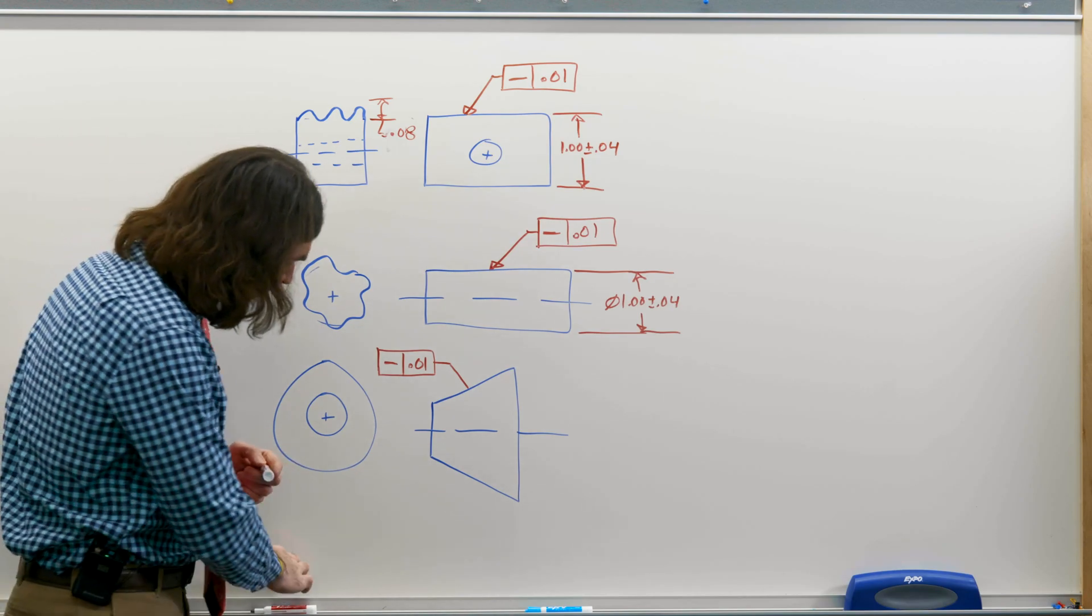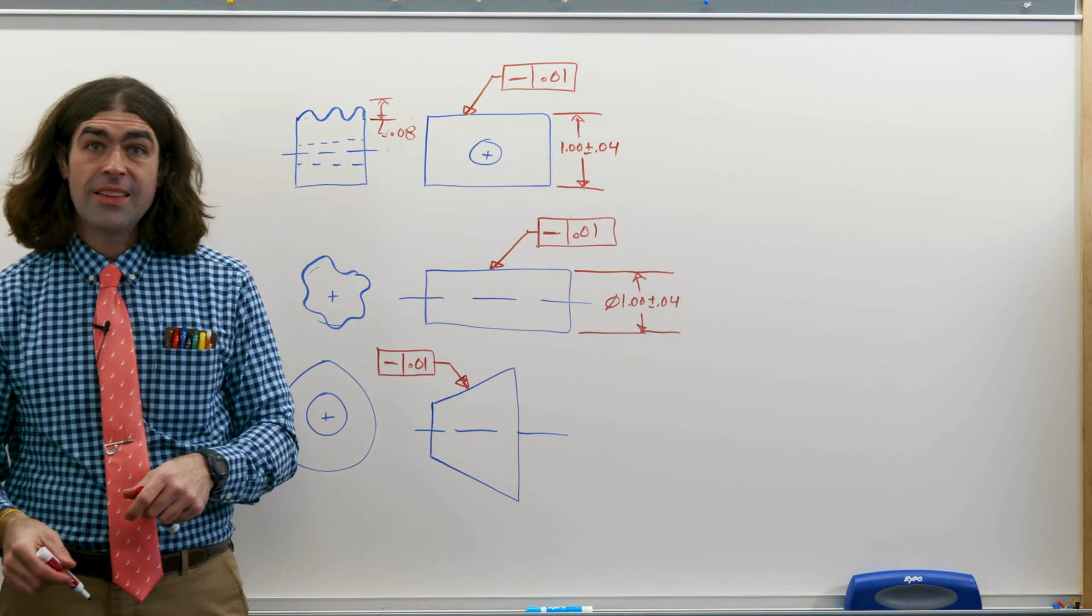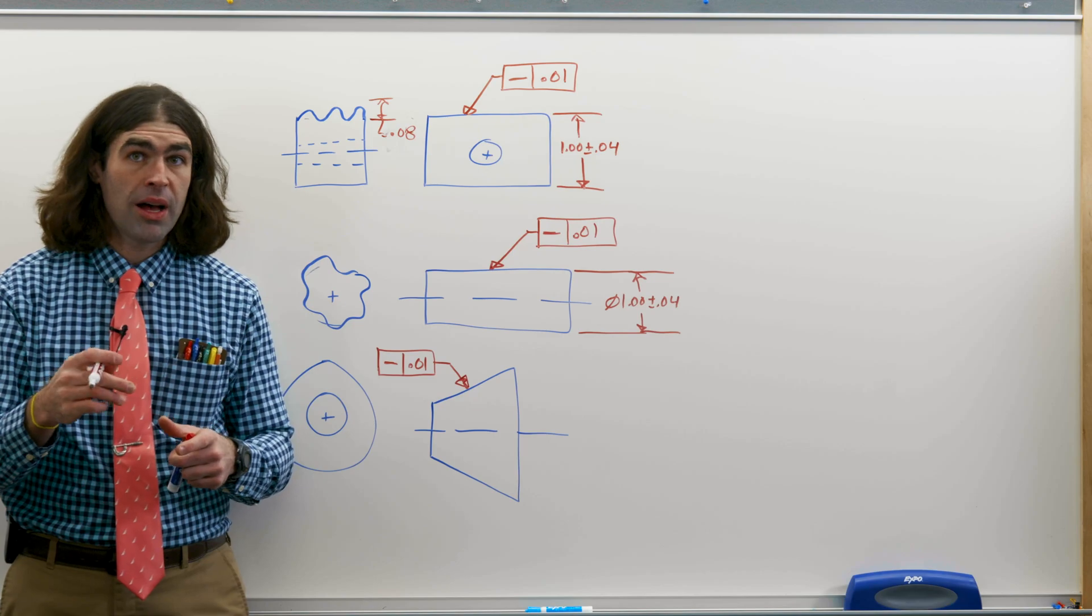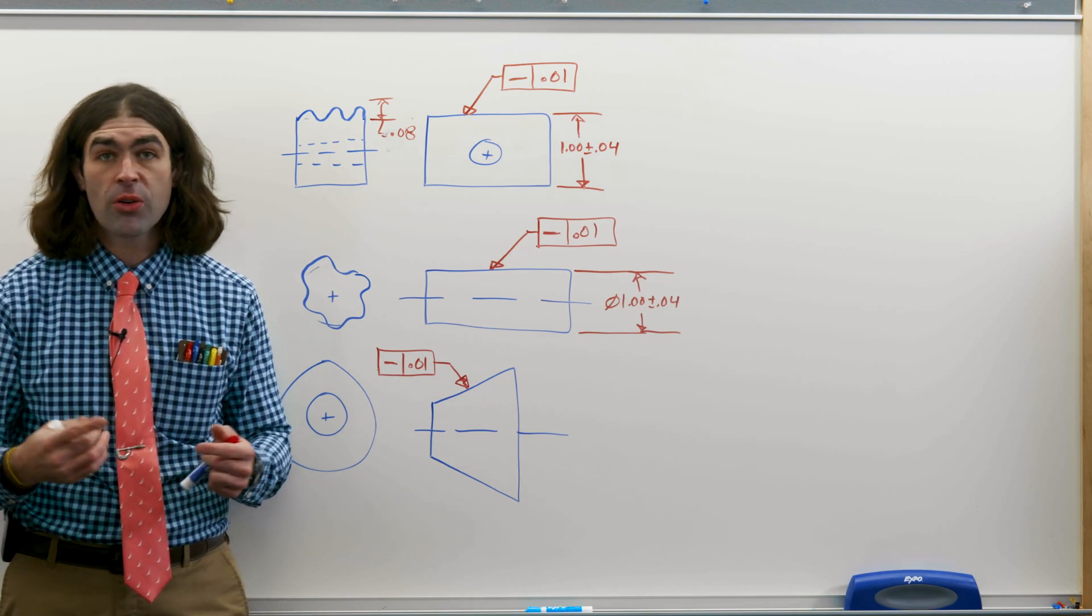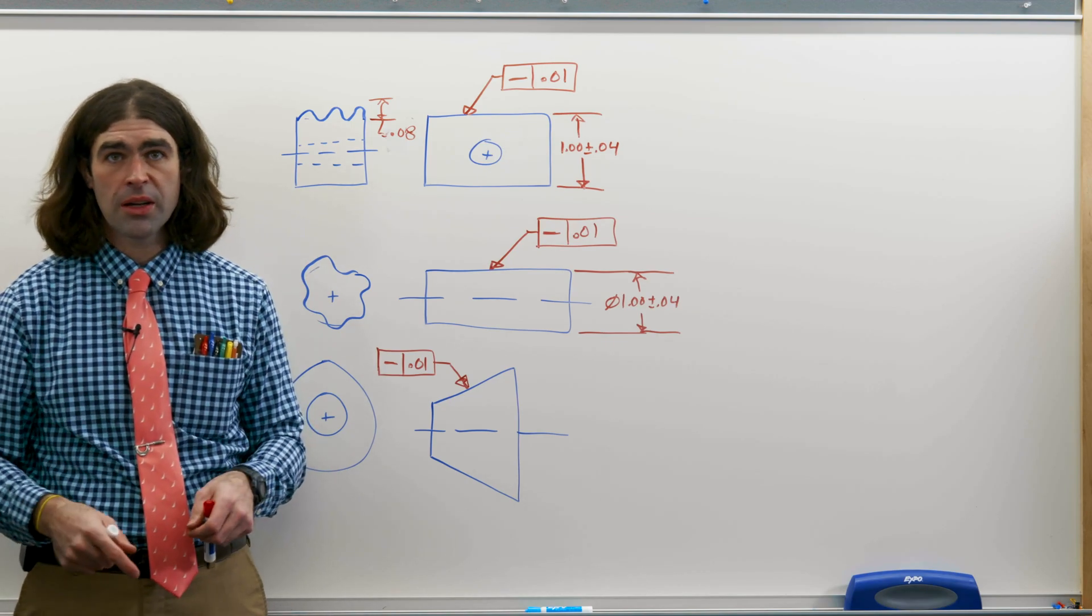Next up, it can also apply to conical features. And in this case, inspection wise, you'd put it on a sine bar in a V-block and then just run an indicator across to see if each individual line element is in fact straight.